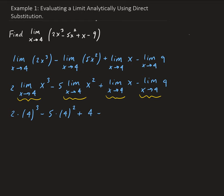And then we have the limit of 9 as x approaches 4. Anytime you have a limit of a constant, whatever x is approaching, that's going to give you the constant. So in this case, we get 9 here.